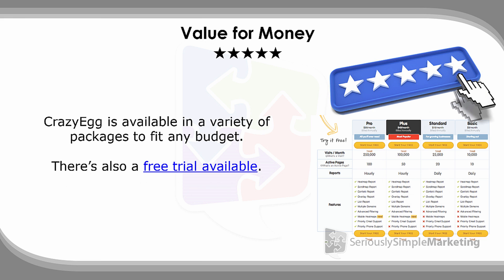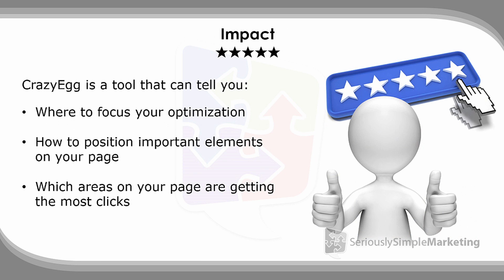Value for the money — again, five out of five stars. They have a free trial available, and paid programs starting at less than ten dollars a month, as you can see on the image right there. The data you get is valuable and not easily found elsewhere. What we particularly like are the scroll maps that show where people are spending time on your page, what parts of your copy are engaging them, and what parts are not — all visible with Crazy Egg's heat maps and scroll maps.